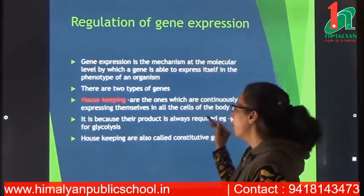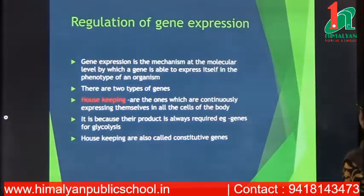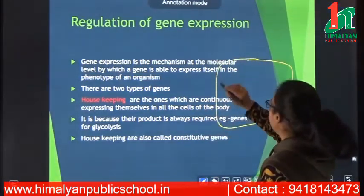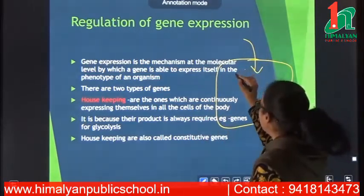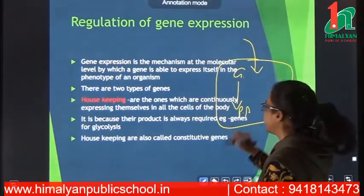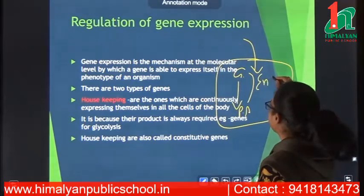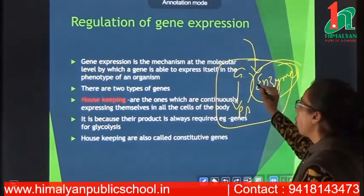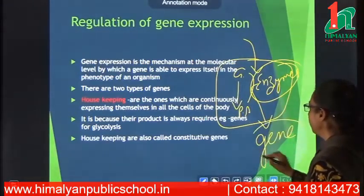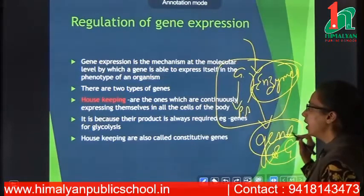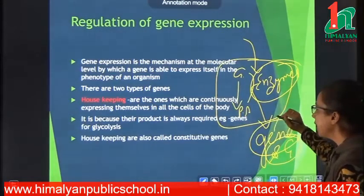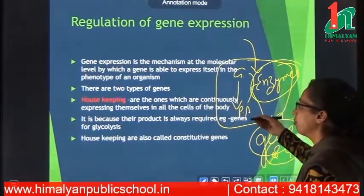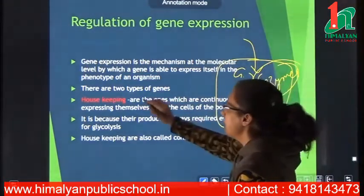For example, genes for glycolysis. Glycolysis is a process in a cell where glucose is broken down into pyruvic acid with the help of different enzymes. The genes which code for these enzymes are expressed every time, and they are called housekeeping genes, also called constitutive genes.